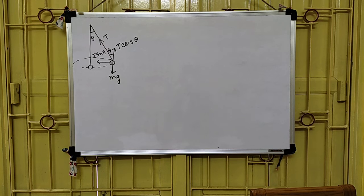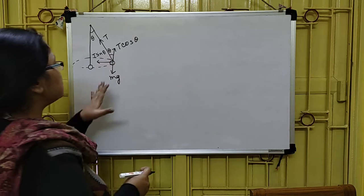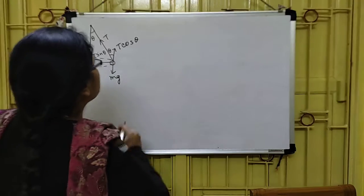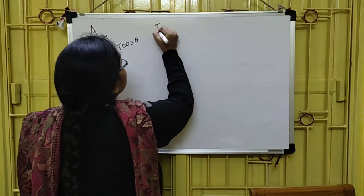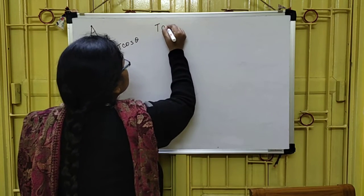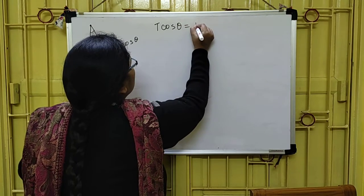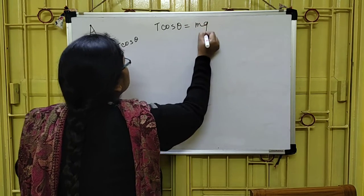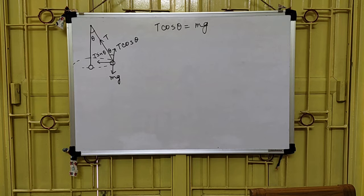As we can see, T cos theta is balanced by Mg — they are equal. So therefore we can write: T cos theta = Mg.